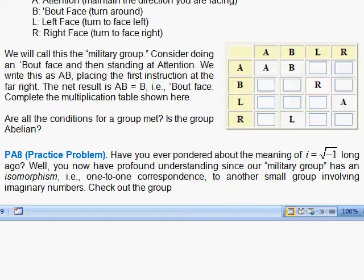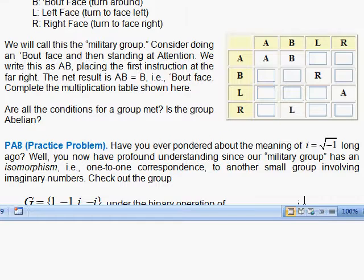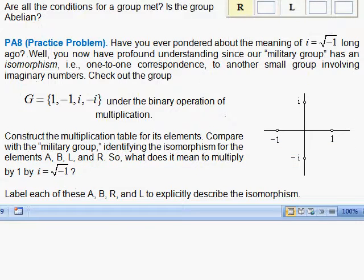Now, when this happens, there's a one-to-one correspondence and the multiplication table is the same. We say the two groups are isomorphic. We have an isomorphism. Isomorphism. That means the groups are equivalent.